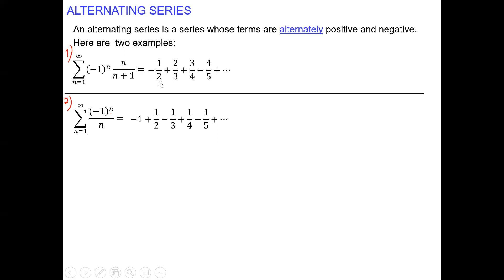And then we have the alternation: negative, positive, negative, positive, and so on — subtracting, adding, subtracting, adding. We have to determine whether this alternating series is convergent or divergent.